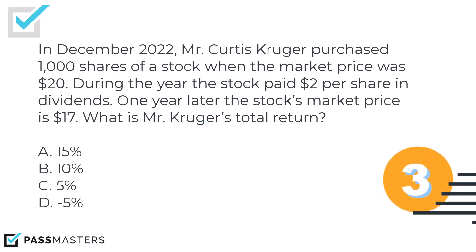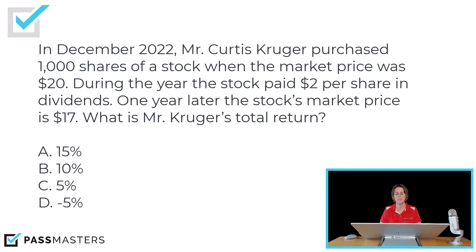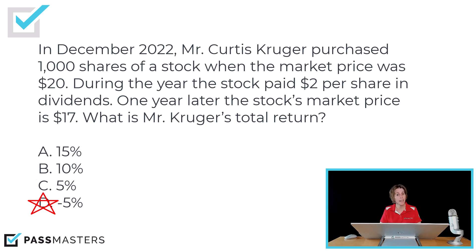Our last question, number three. In December 2022, Mr. Curtis Kruger purchased 1,000 shares of stock when the market price was $20. During the year, the stock paid $2 per share in dividends. One year later, the stock's market price is $17. What is Mr. Kruger's total return? We have yield on a stock — dividends — $2 plus growth. Wait, there is no growth; we have depreciation — $3 worth of depreciation. When depreciation is more than yield, total return is going to be negative. So we have $2 plus negative $3, which is negative $1, divided by what he paid for the stock, $20. Negative $1 divided by $20 is negative 5%. You can have a negative total return.